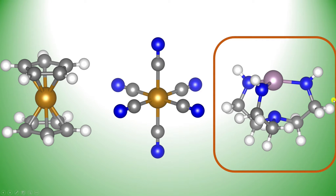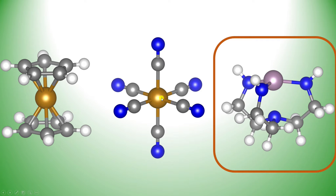For ferrocene, the total charge is zero because each C5H5 is minus one, and Fe is 2+, so overall charge is zero. For the hexacyanoiron complex, there is a six-minus charge and Fe is 3+, so subtracting six minus three gives an overall charge of minus three. For the HIPTMO metal complex, the overall charge is zero because the metal is 3+ and the three nitrogen atoms carry three negative electrons, giving an overall charge of zero.